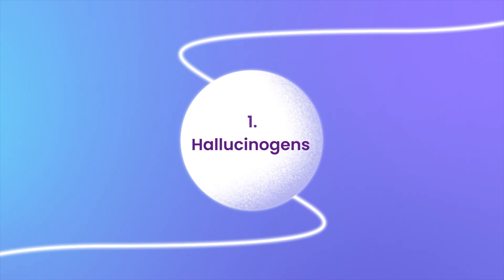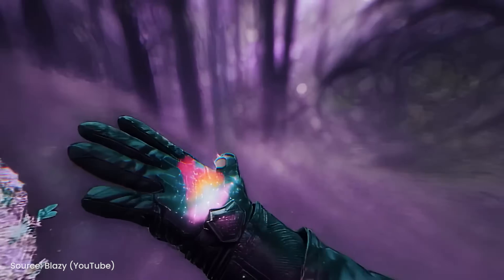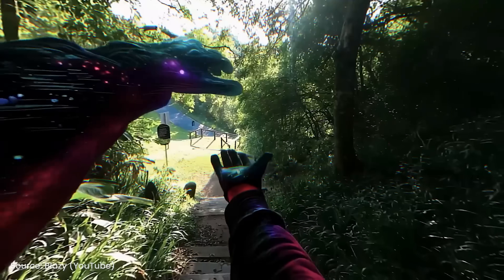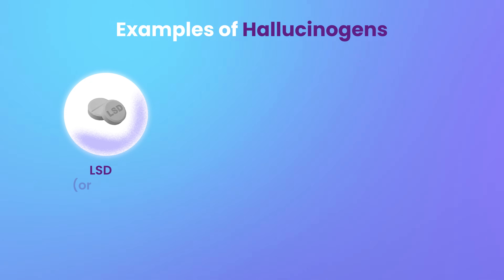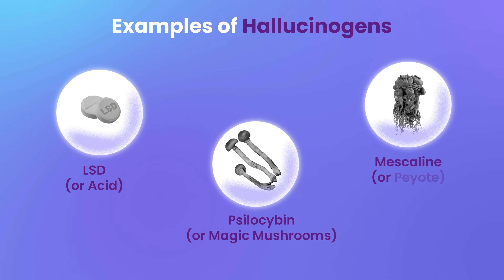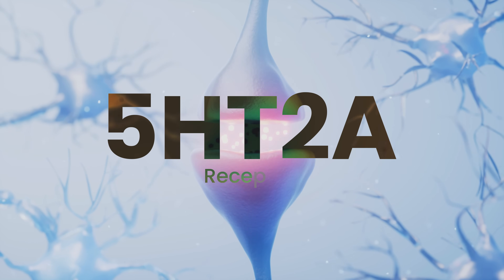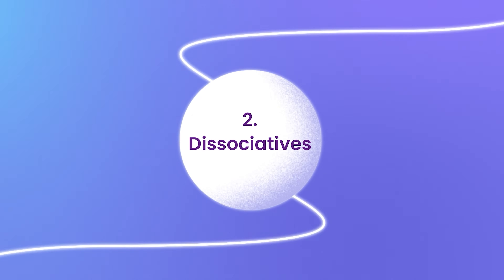Let's categorize the known psychedelics into three parts. Number one is classical psychedelics, or hallucinogens — drugs that make you hallucinate things, that is, see or experience things that are not real. Examples include LSD or acid, psilocybin also called magic mushrooms, and mescaline or peyote. These mainly act on the serotonin receptors in the brain — specifically the 5-HT2A receptor.